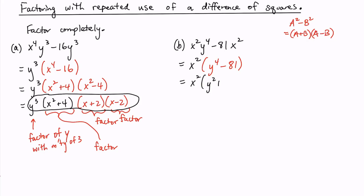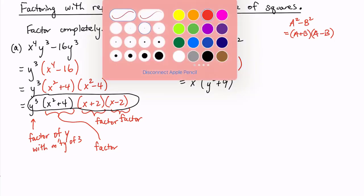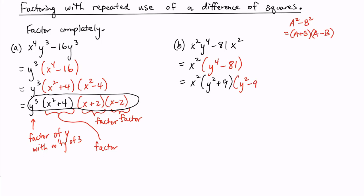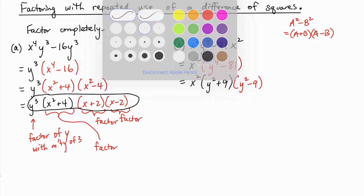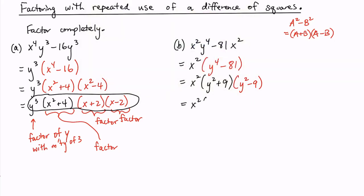This is y squared plus 9 times y squared minus 9. And there's the difference of squares again. So there is a repeated use of difference of squares here. And we just keep factoring. Keep the pencil moving.